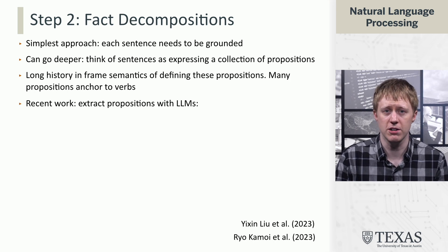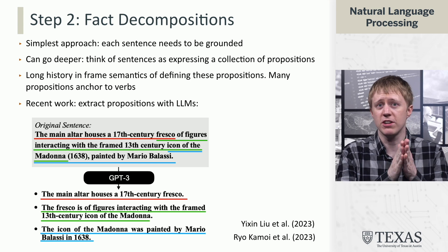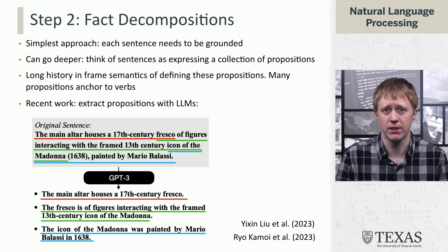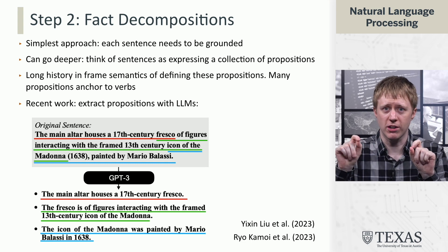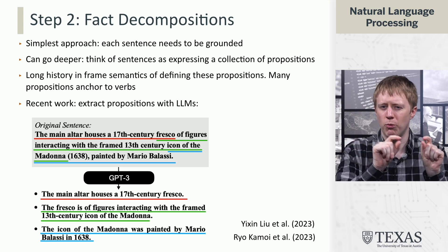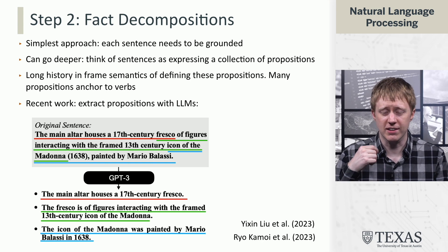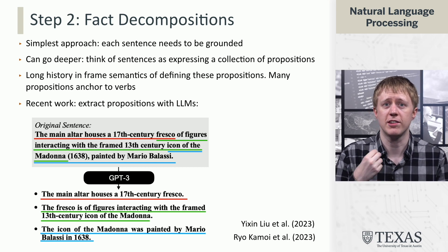We're going to use large language models to extract propositions rather than a frame semantic parser. For example, consider the sentence: 'The main altar houses a 17th century fresco.' Even up to that point, we already have a unit of meaning that can be checked. Then, 'a 17th century fresco of figures interacting with the framed 13th century icon of the Madonna' — that's a separate proposition about what the fresco depicts, distinct from where it's housed. And then 'icon of the Madonna painted by Mario Bellassi' — another separate piece.